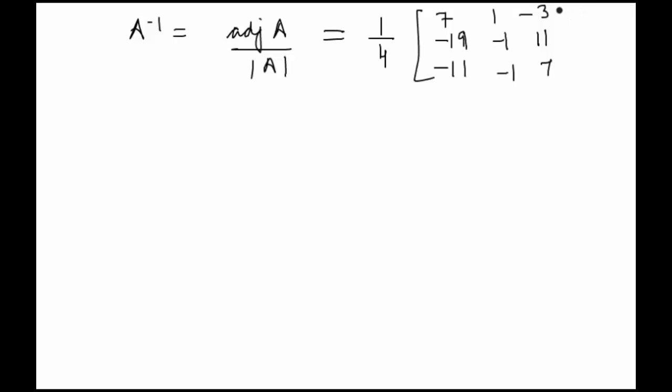As AX was equal to B, therefore we can say that X would be equal to A inverse B. Substituting the values, we would get 1 by 4 times the adjoint matrix into B, which was 7, minus 5, 12.